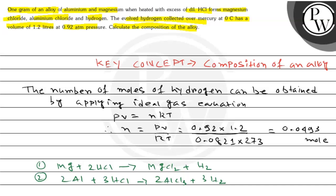Now, let x gram of Mg and 1 minus x gram of Al be present. The whole sample weighs 1 gram, so if Mg is x gram, then Al will be 1 minus x gram.